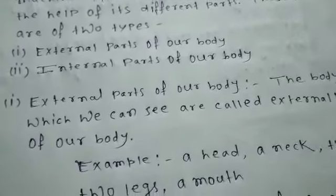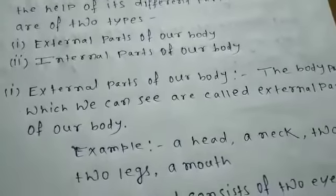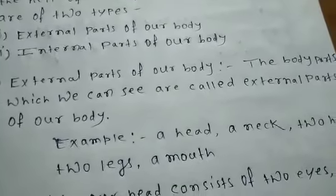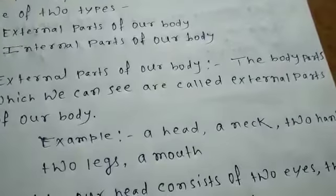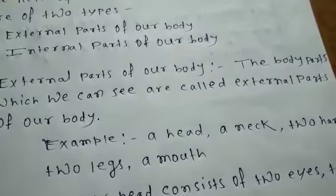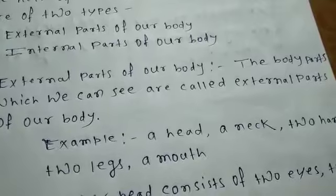For example, a head, a neck, two hands, two legs, and a mouth are all external parts of our body.